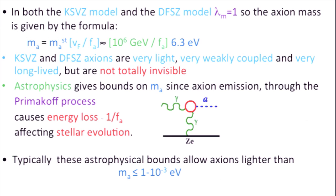These invisible axion models — what makes them interesting is that they're not totally invisible. Astrophysics gets bounds on the mass of the axion because there's a coupling of axions to two photons, and stars will lose energy by a process in which photons in the star transform into axions which then leave the star. You can put a bound on the mass of the axion, or on the scale 1 over F. If F is very large, they do not affect stellar evolution, and so that's why you get an upper bound for the mass of the axion.